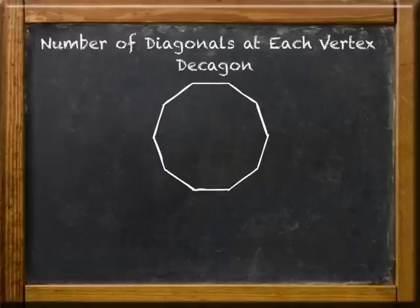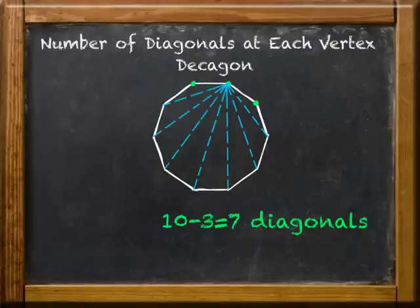Same thing for a decagon. From any vertex, there are three vertices that you can't connect to if you want a diagonal. The ones on either side and itself. So for a ten-sided figure, you'd have ten minus three, or seven diagonals at each vertex.